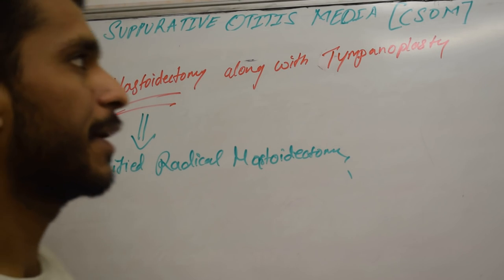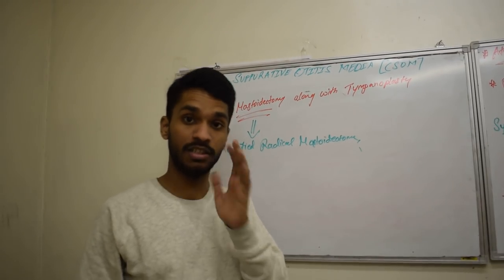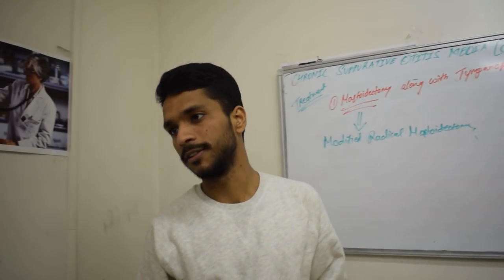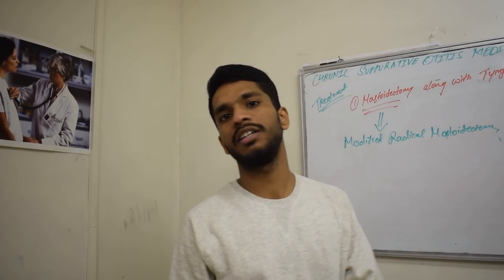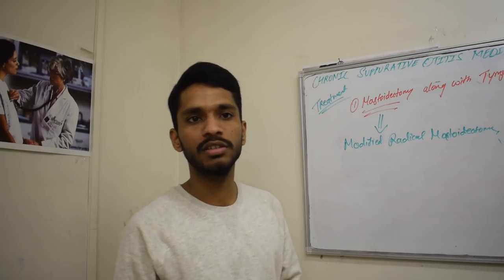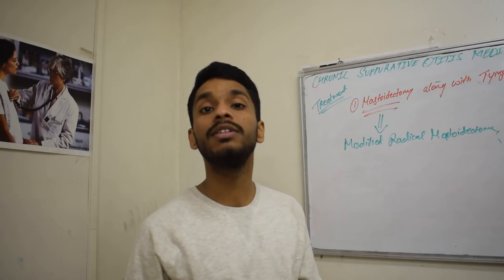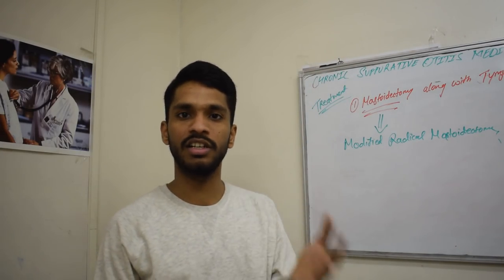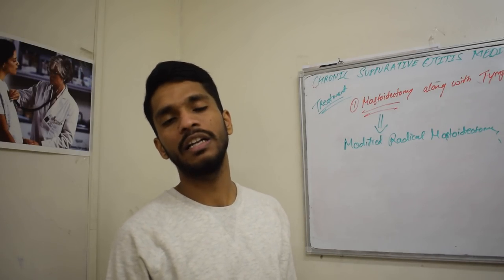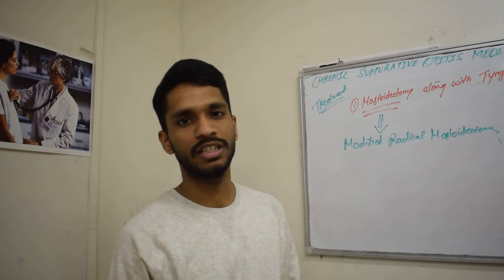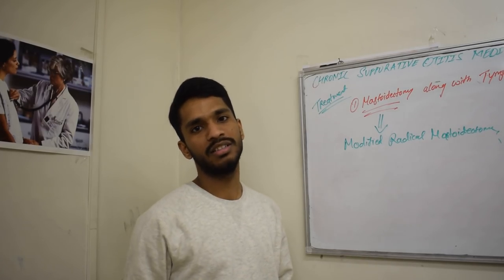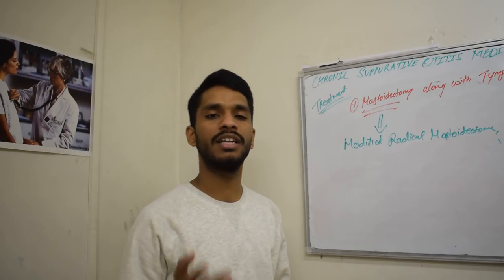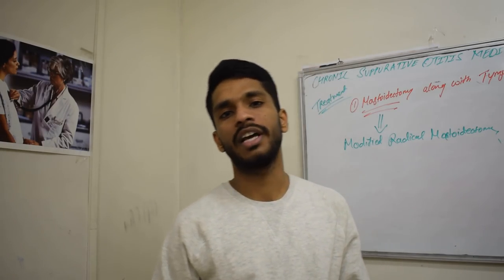To summarize — CSOM is any chronic infection of part or whole of the middle ear cleft. There are two types: tubotympanic (safe type, central perforation) and atticoantral (dangerous type, marginal or attic perforation, associated with cholesteatoma which destroys surrounding tissues and bones). The most important point to remember is that the most commonly necrosed ossicle is the long process of incus. Thank you for watching — please like, share, and subscribe to MediSimplified.